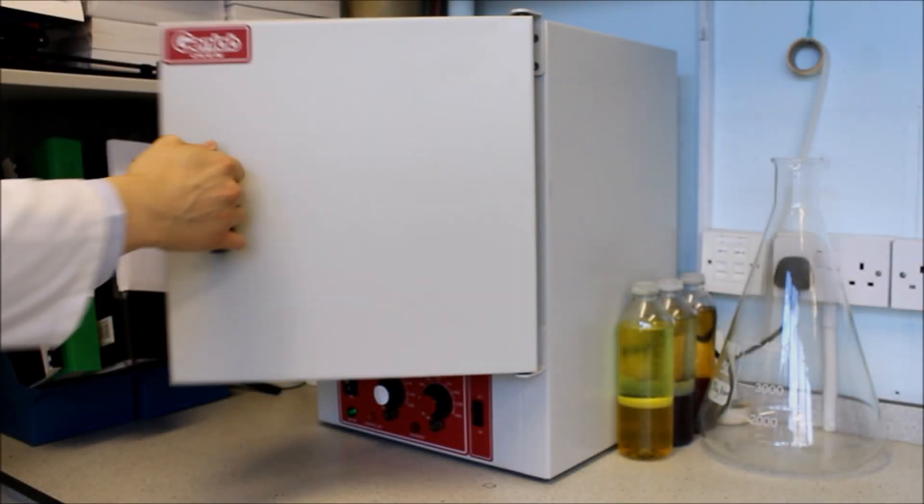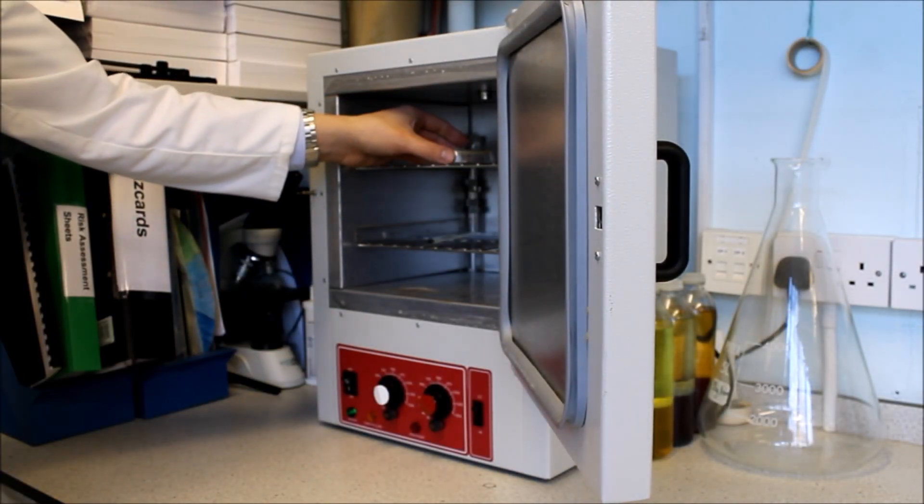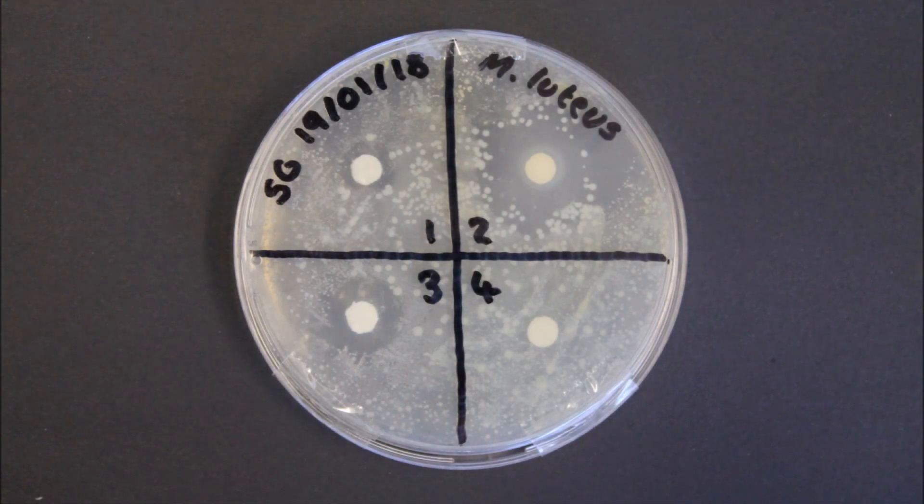Upon removing the agar plate from the incubator we can clearly see the zones of inhibition. Zones of inhibition are the areas around each antiseptic disc in which bacteria have not visibly grown.